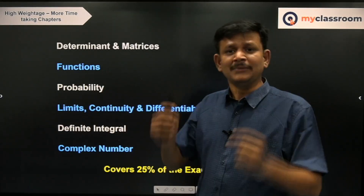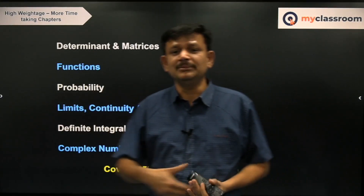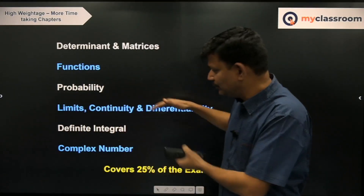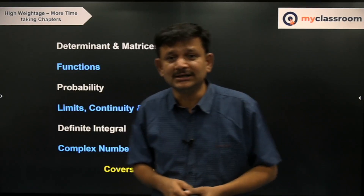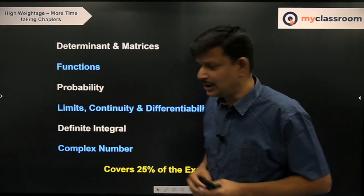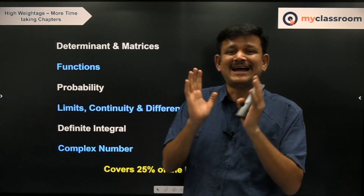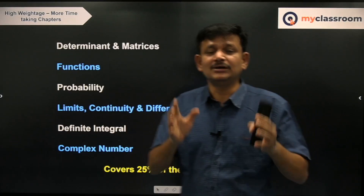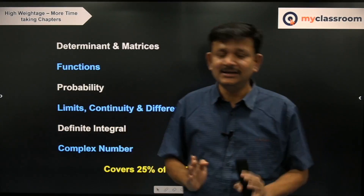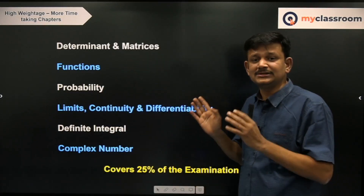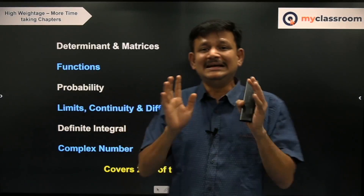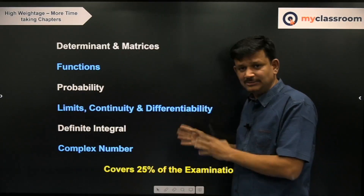Definite integral has high weightage — at least 2 questions will be asked — but it is a little time-consuming given the number of varieties of questions. Do it towards the end of your preparation. Complex numbers also has many varieties, but if you want to do it in a short time, focus on geometry of a complex number, standard loci, basic properties of i, basic addition, multiplication and division of complex numbers. Modulus and argument are very important — have a proper understanding of |z| and arg(z). Finally, De Moivre's theorem and rotation theorem are what you must learn.